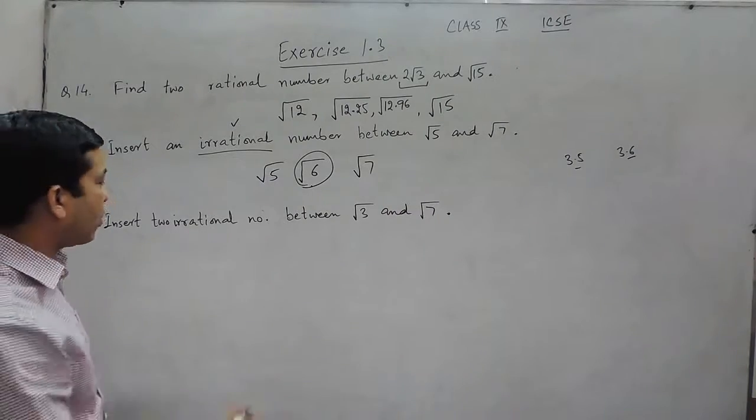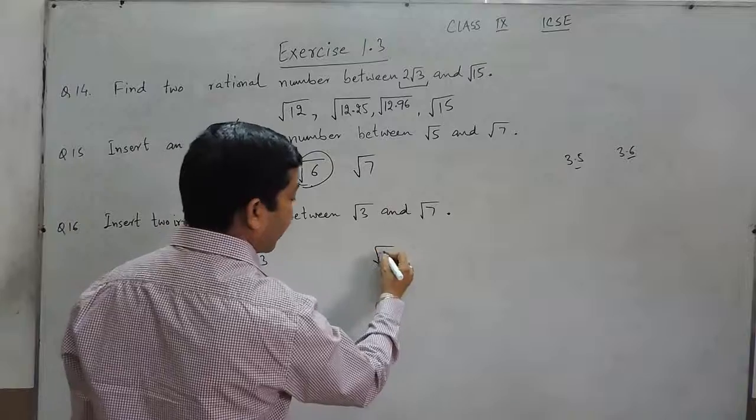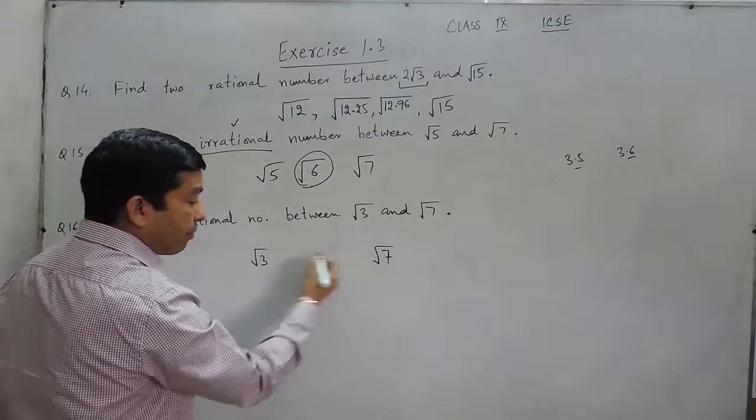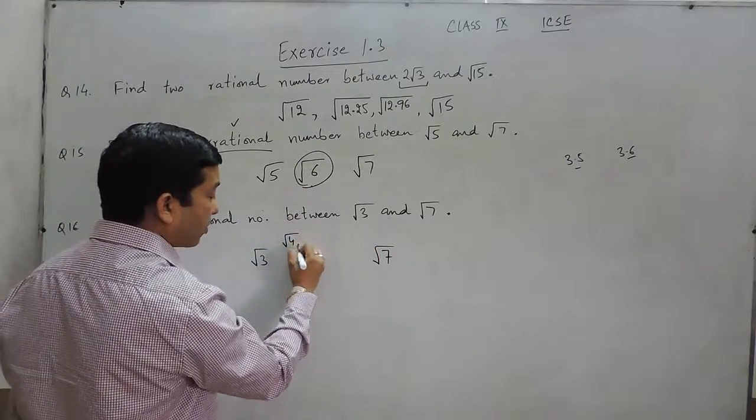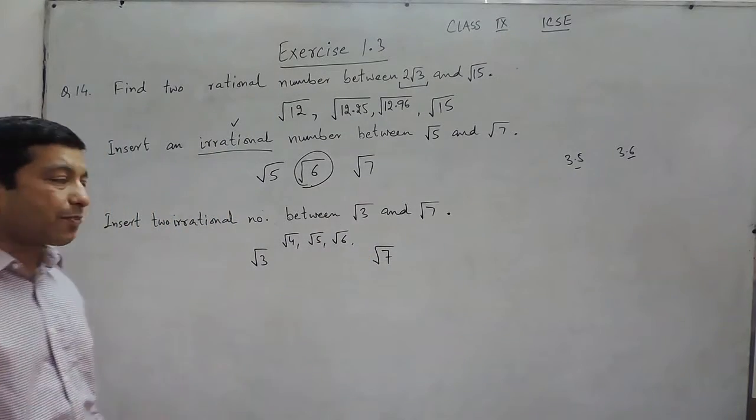Question number 16 is: insert two irrational numbers between root 3 and root 7. So when we talk about root 3 and root 7, there are numbers in between the two: root 4, root 5, root 6, or root 6.1...